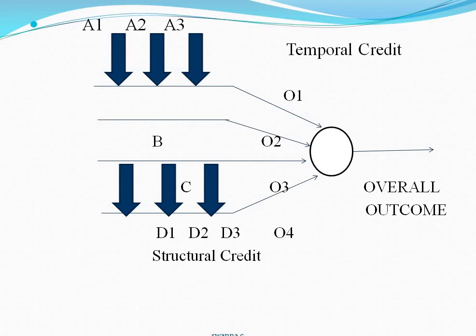For example, to get the overall outcome, I took four internal decisions at particular times. The first internal decision outcome is represented as O1, the second internal decision outcome is O2, the third internal decision outcome is O3, and the fourth internal decision outcome is O4. These overall outcomes are obtained by these internal decisions, each taken at a particular time.